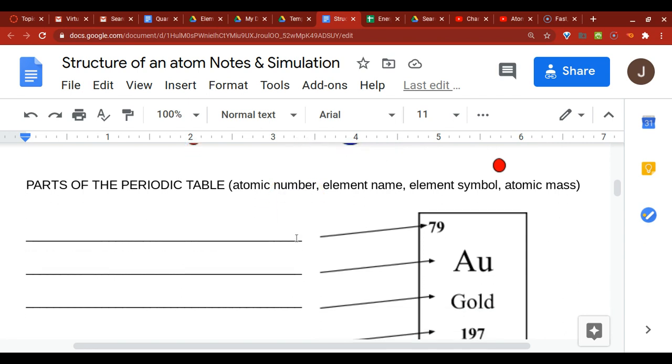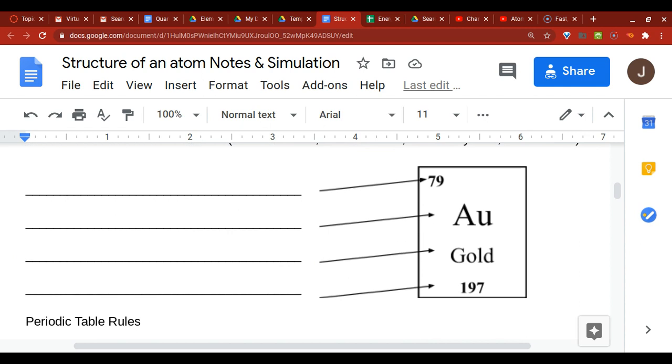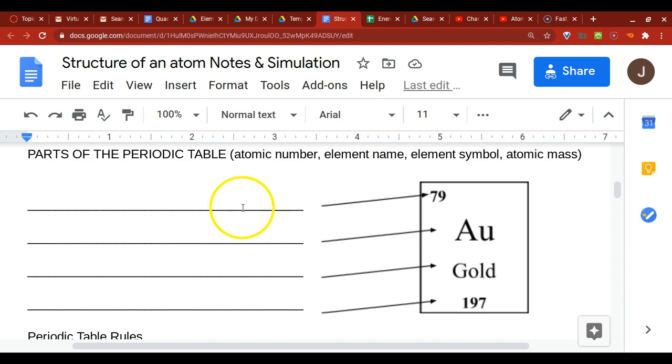All right, so now we're ready to figure out how to decode the periodic table. Anytime you look at the periodic table, you're always going to see these four things.